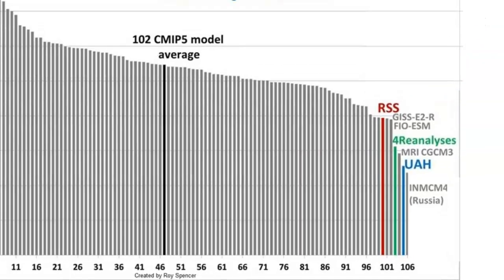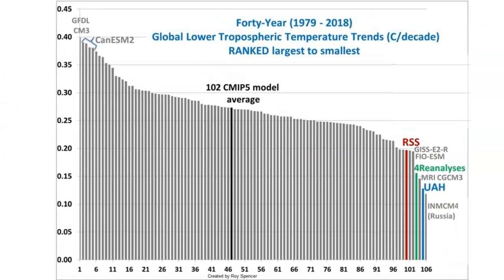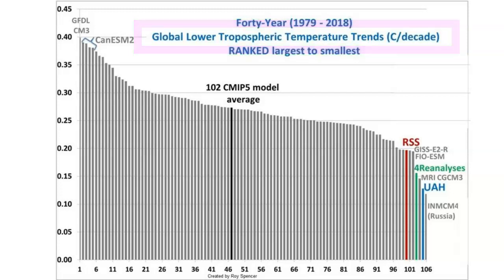One last note: this graph displays temperature data for the lower troposphere because this is the closest to the surface. However, the models are designed to create forecasts for the entire depth of the troposphere where all our weather occurs — even the 10-mile-high hurricanes.